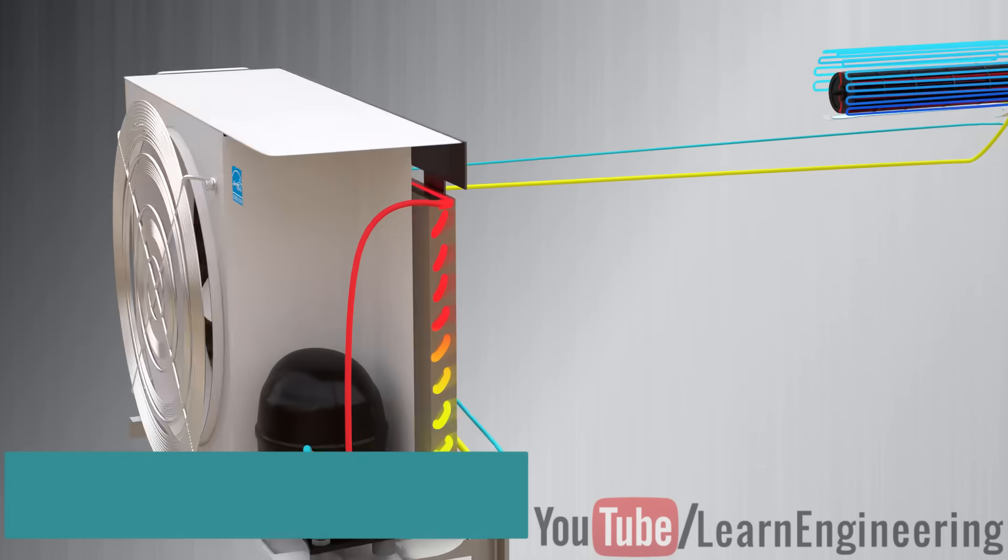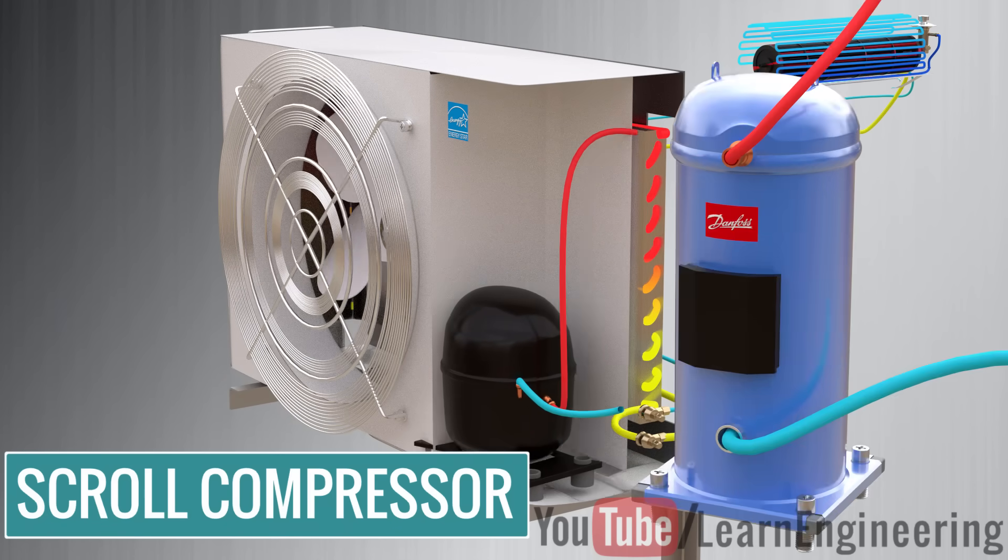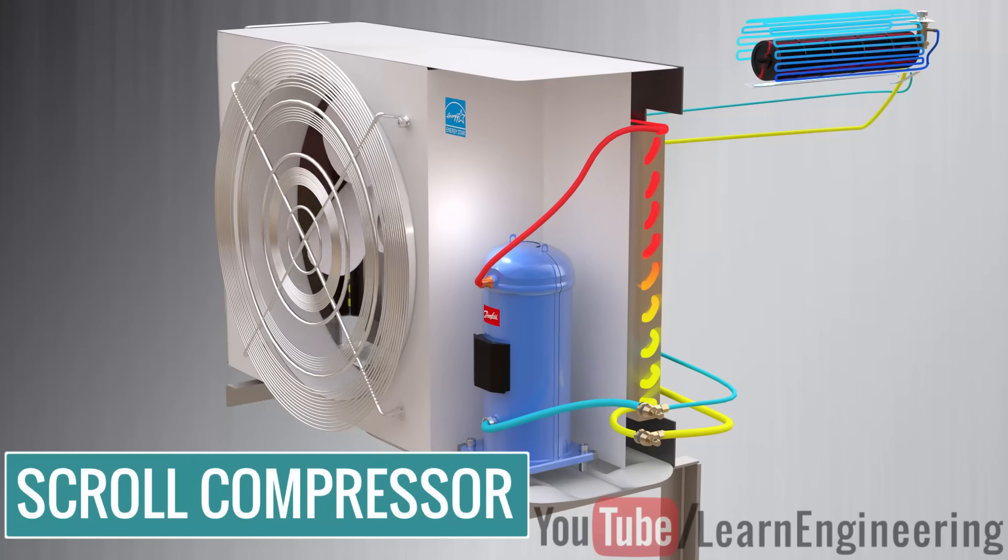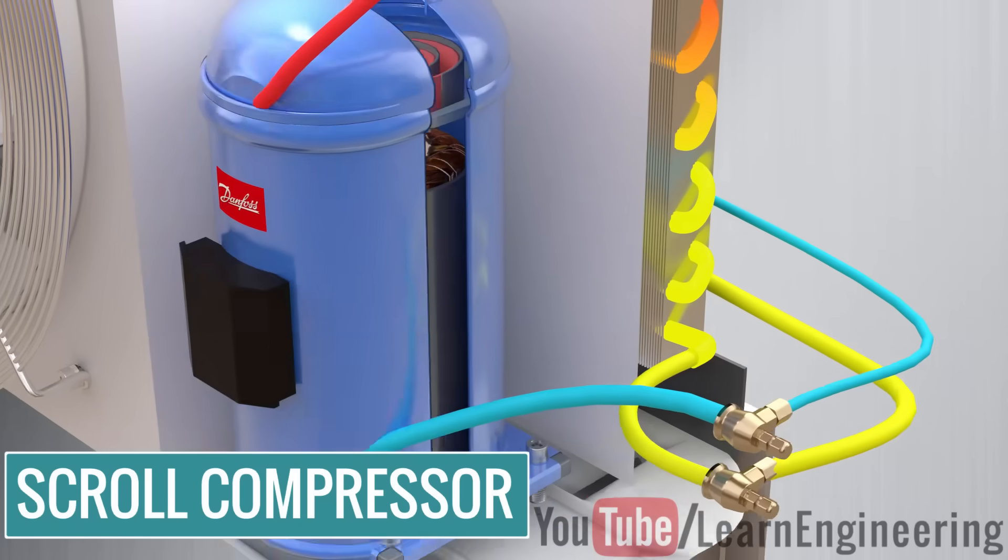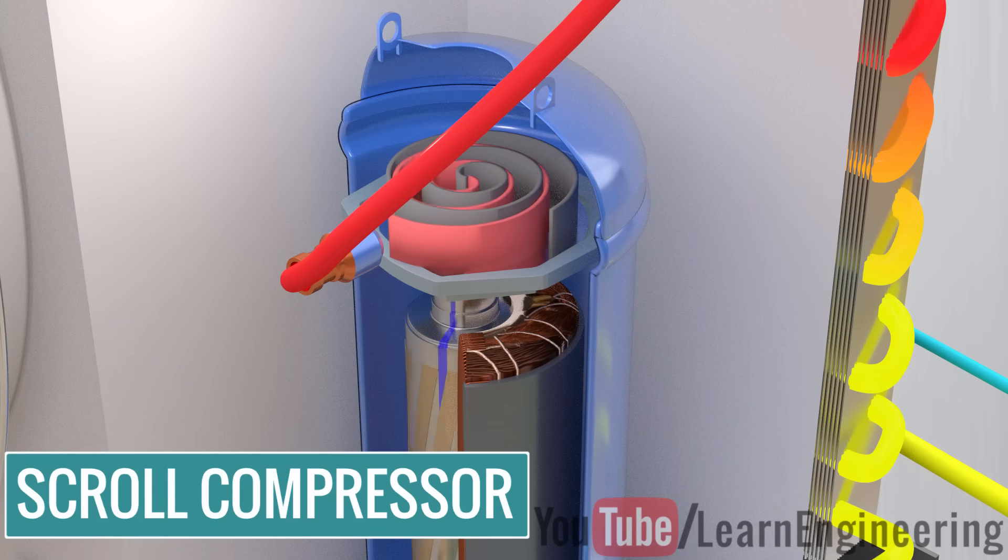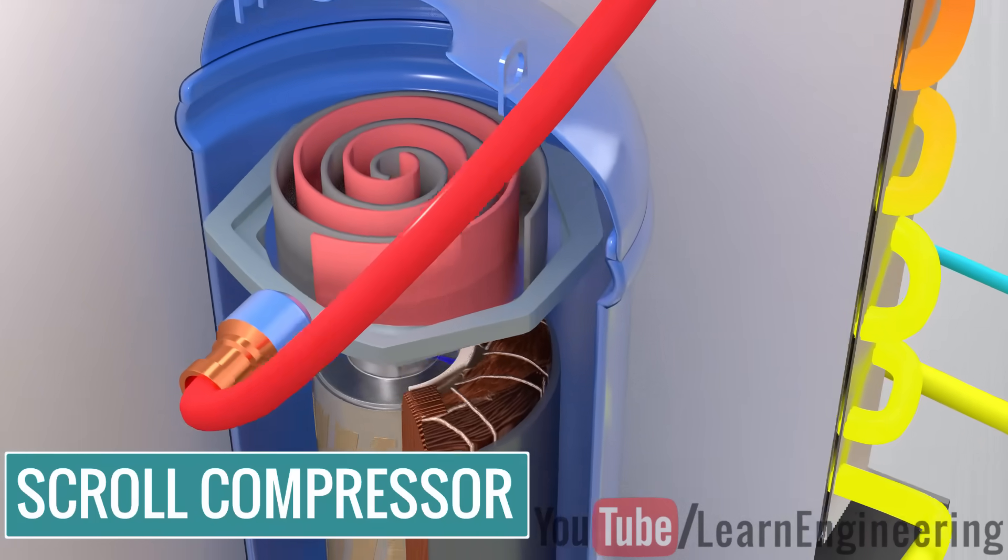Modern air conditioners use scroll compressors instead of the reciprocating type. You can see how the compression process happens from this animation. They are silent and they have good speed control.